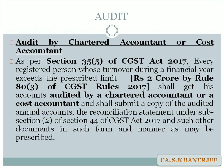Now regarding 'every registered person' — suppose a company has four different branches. One branch has a turnover of more than 2 crores, say 2 crores 20 lakhs, while other branches have turnovers of 10 lakhs and are situated in different states with separate registrations. As per the reading of the section and the rules, it is the view that only that particular branch having a turnover of more than 2 crores needs to get itself audited, not the other separately registered branches.